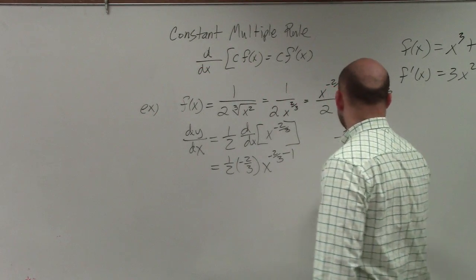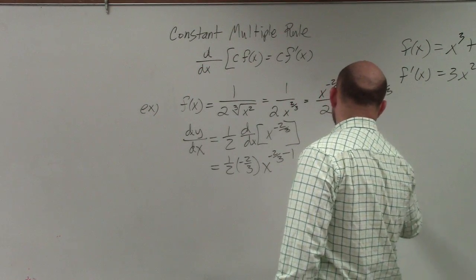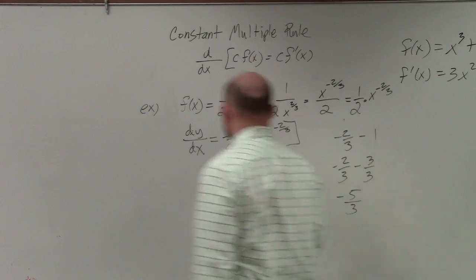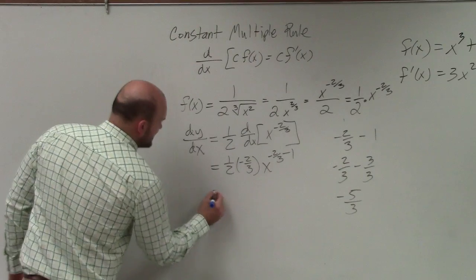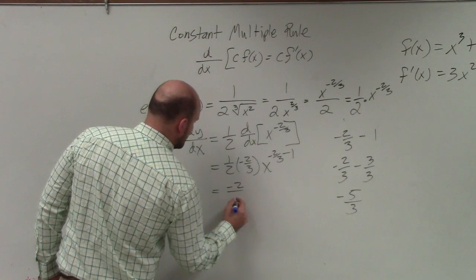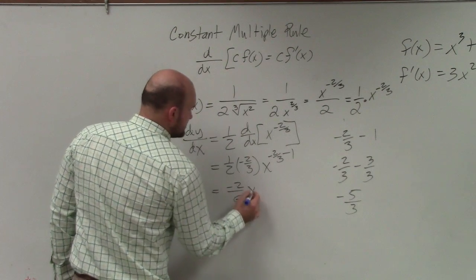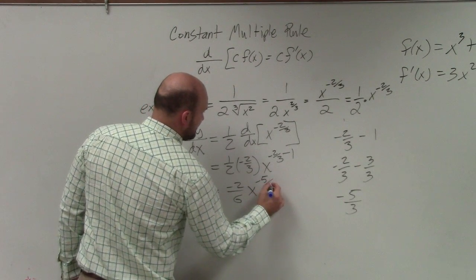Negative 2/3 minus 1 is the same thing as -2/3 minus 3/3, which equals -5/3. Multiply this out: -2/6, which is just -1/3, times x^(-5/3).